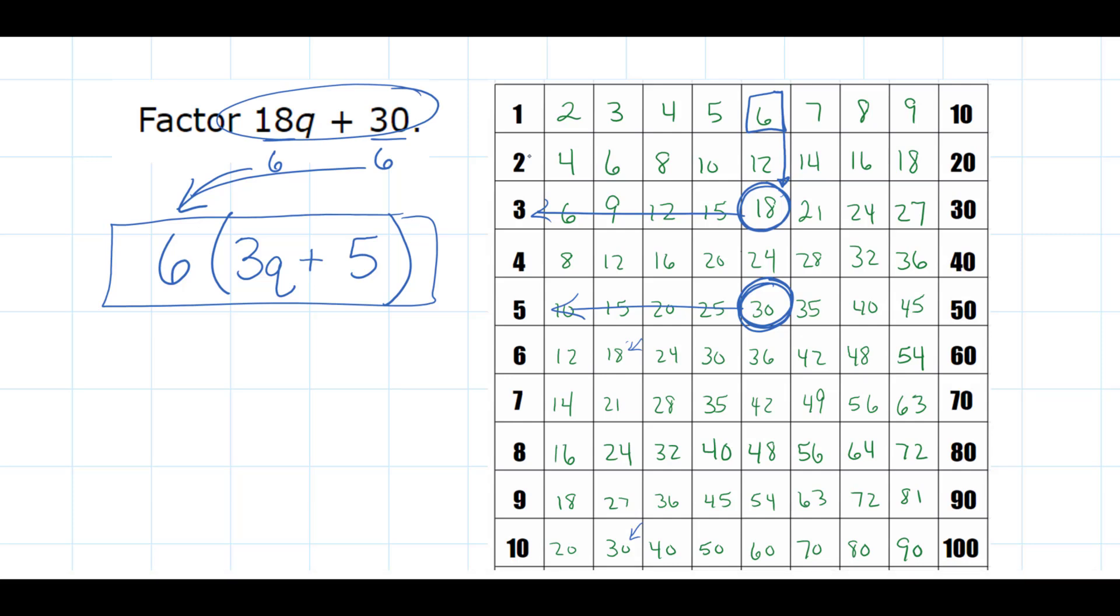A lot of students are asking, 'Well, Mr. Parks, I don't understand—what is our answer?' Actually, this is it. The one that's in the box. We have factored out a 6 and we have shown that we have reduced the inside of our parentheses down to 3q and 5.